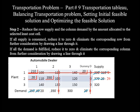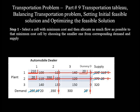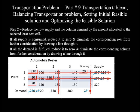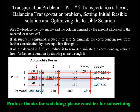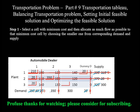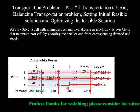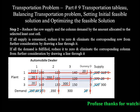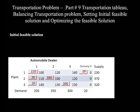Among the four remaining unit costs, 110 is the least. The unfulfilled demand is 40 and unconsumed supply is 20; the smaller, 20, is allocated. This reduces demand to 20 and supply to 0, so row 2 is crossed out. The next smallest cost is 140, with demand 20 and supply 320; 20 is allocated, reducing demand to 0, so column 1 is eliminated. The only remaining unit cost is 150, with unconsumed supply and demand both equal to 300, so 300 is allocated. All demand and supply are reduced to 0, and the initial feasible solution is complete.